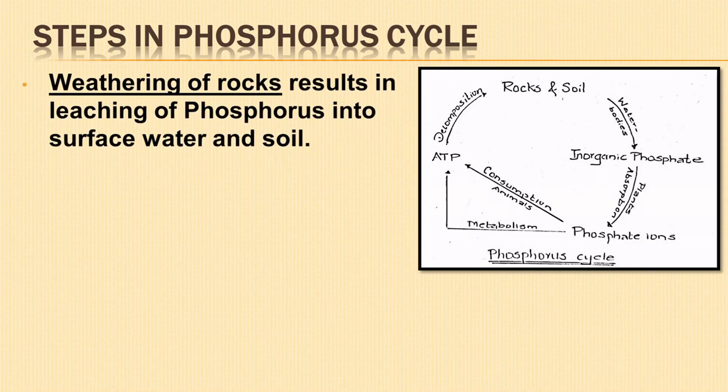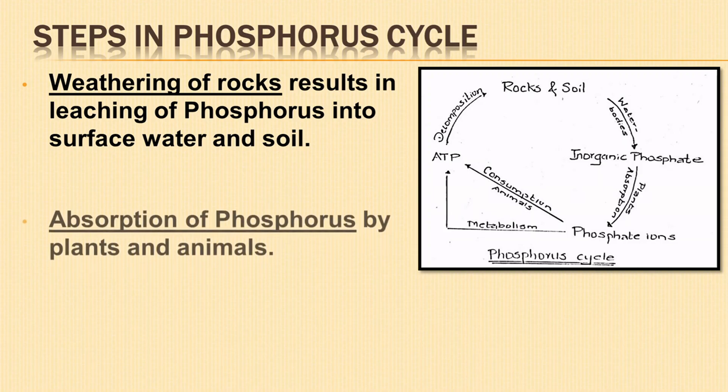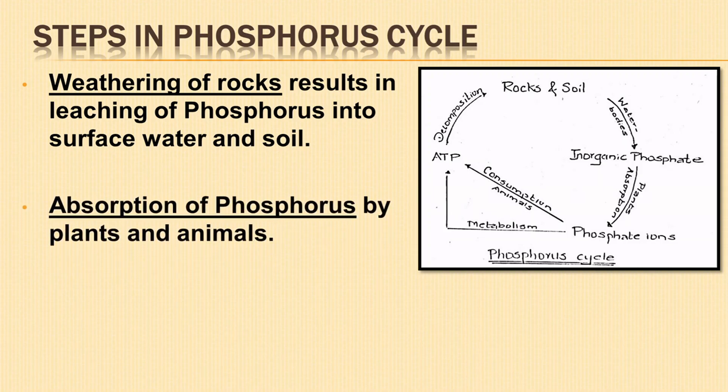The first step is the weathering of rocks. Phosphorus, which occurs in combined state with other elements in the rock, is released by the action of rain. Weathering of rocks results in leaching of phosphorus into surface water and soil.